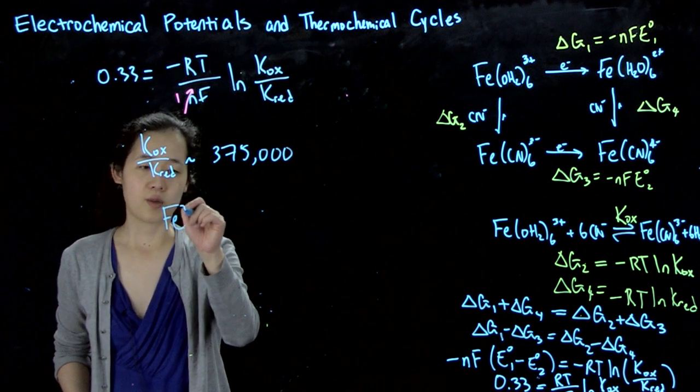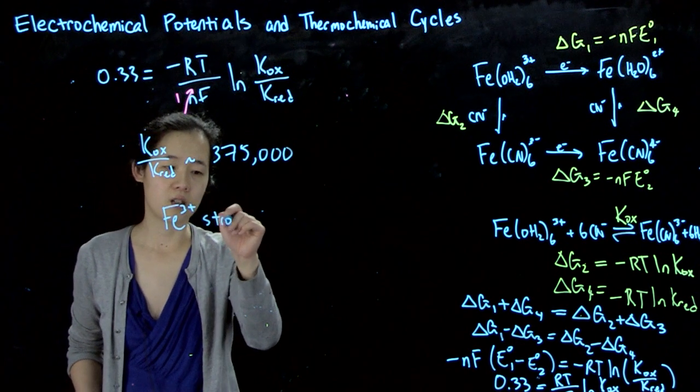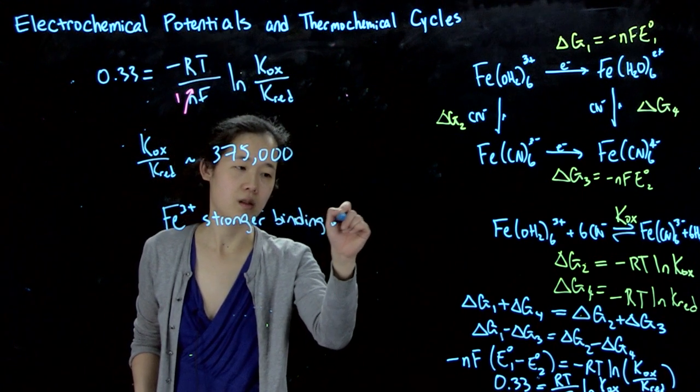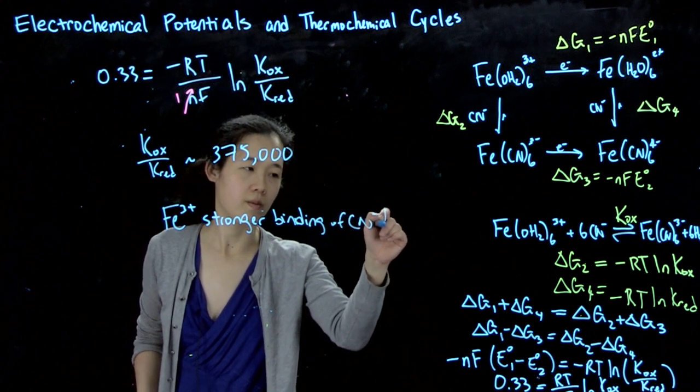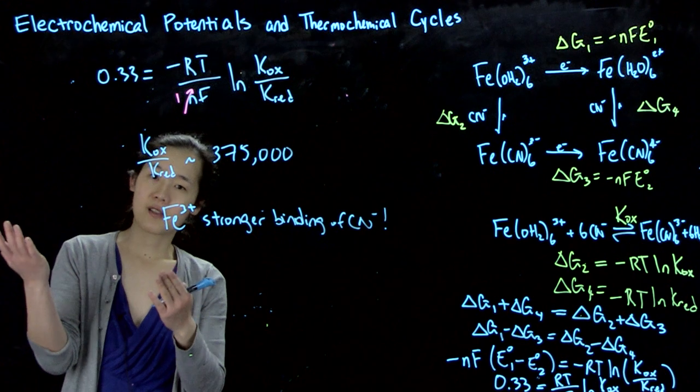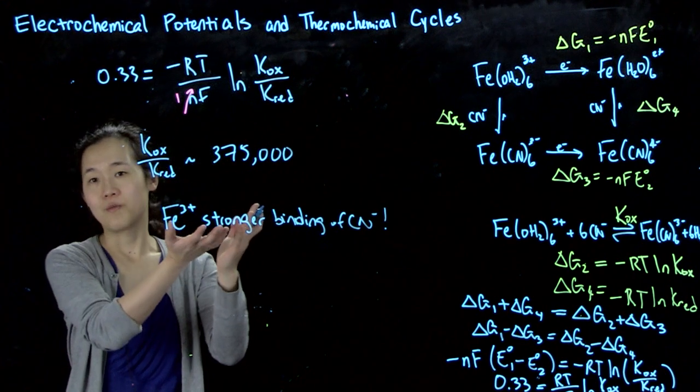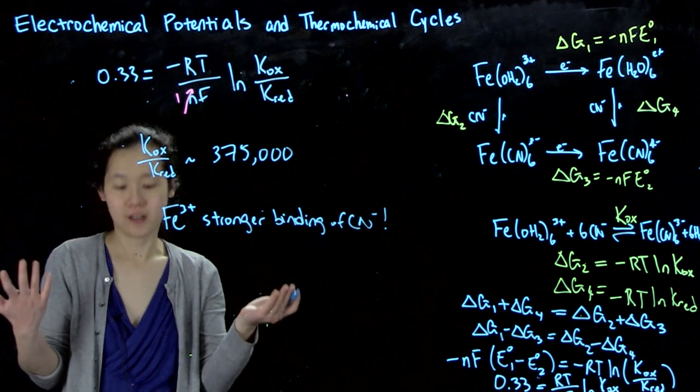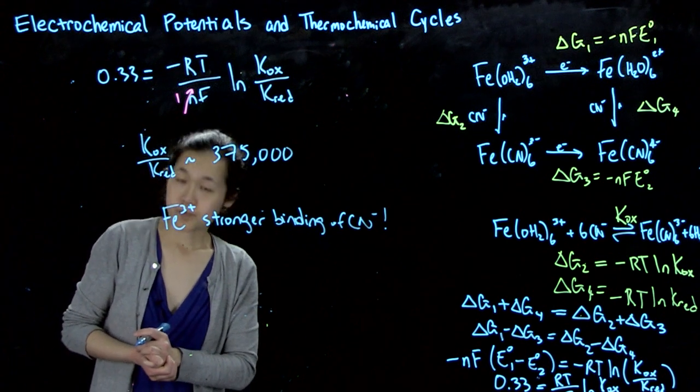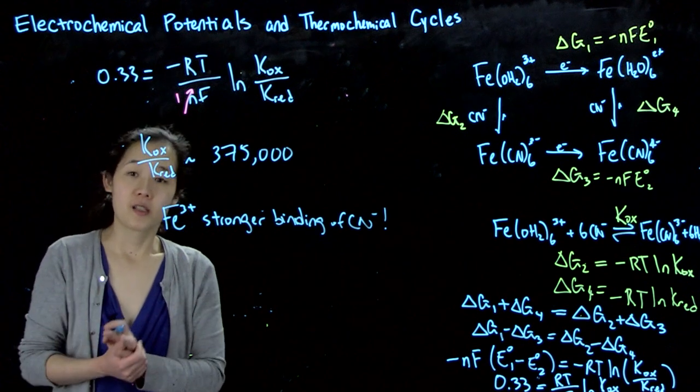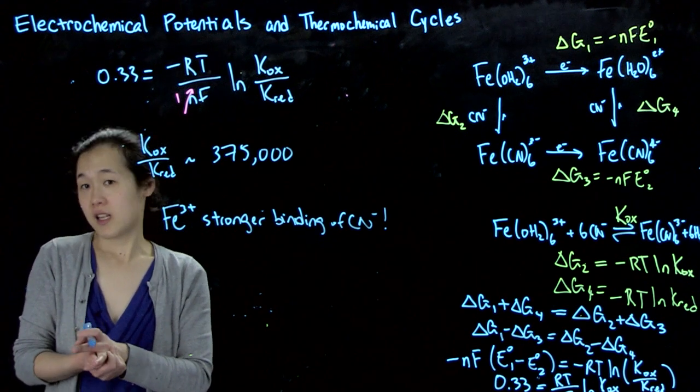So iron(III) plus stronger. So because of that, this is how we can relate reduction potentials to actual, or not actual chemistry, but different types of chemistry using thermochemical cycles. We can do the same thing with solubility products with other types of binding. So we'll go through a few of these examples in actual class.